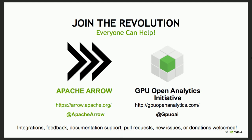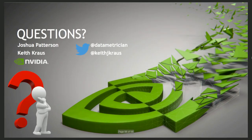That's kind of it — join the revolution. Apache Arrow and the GPU DataFrame are all open source, so try to use them today. Report issues, give pull requests, give any kind of feedback — anything helps. With that, we'll take questions.